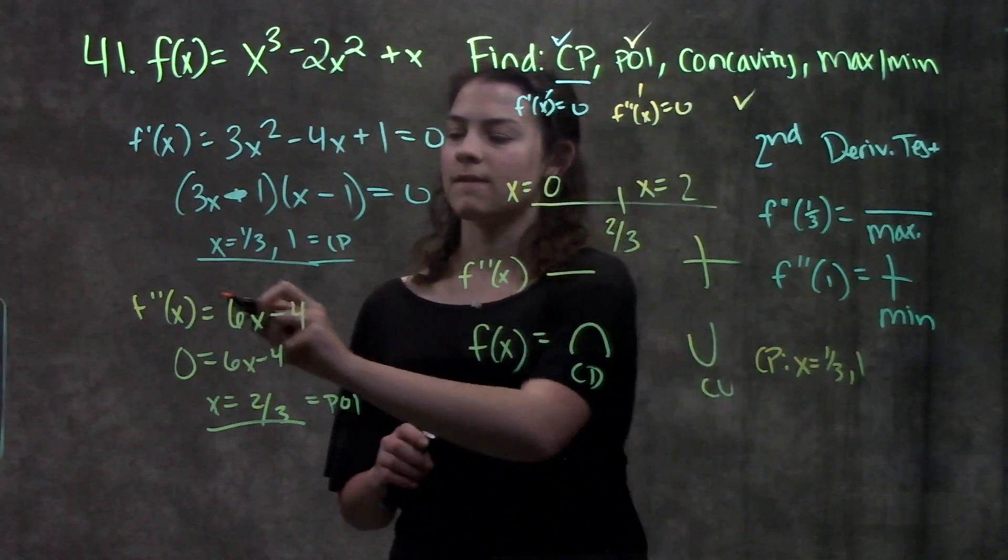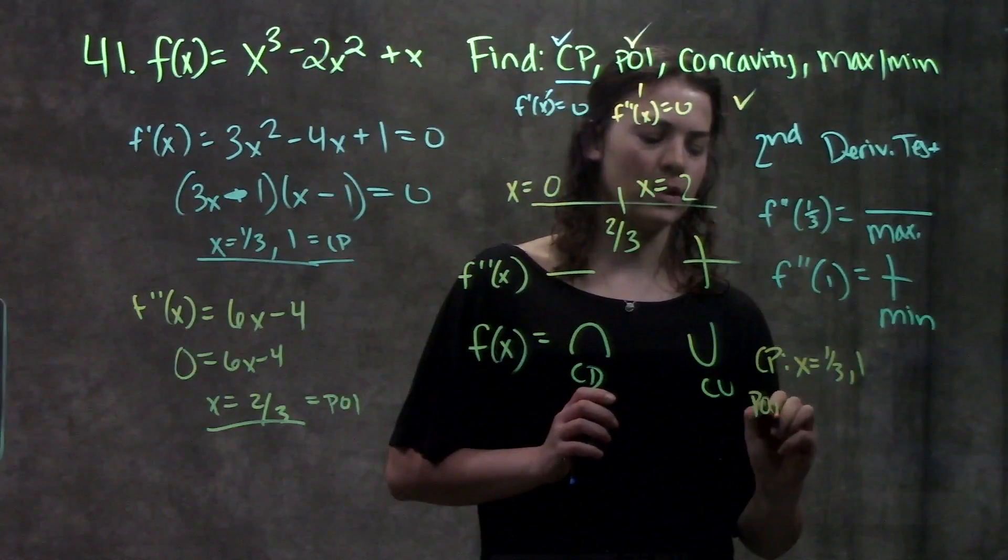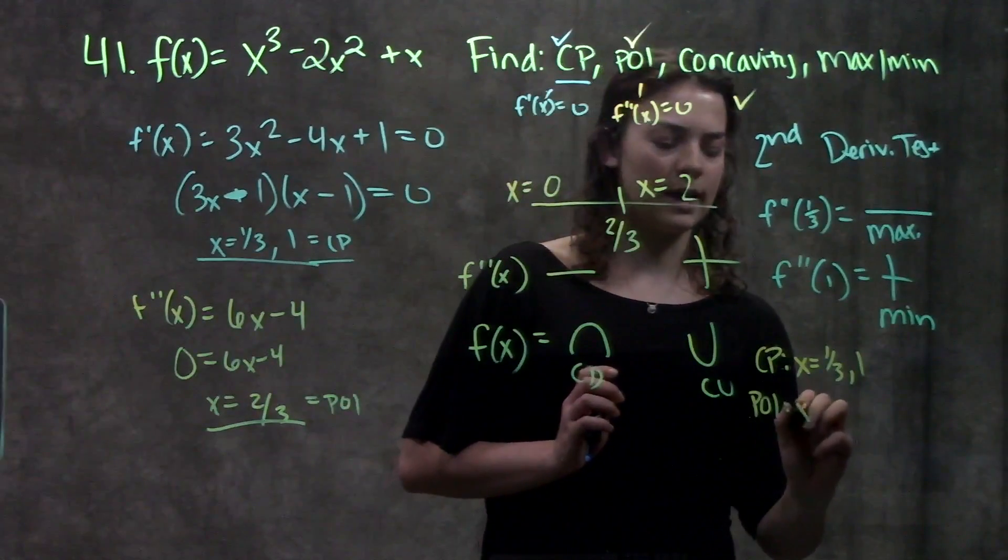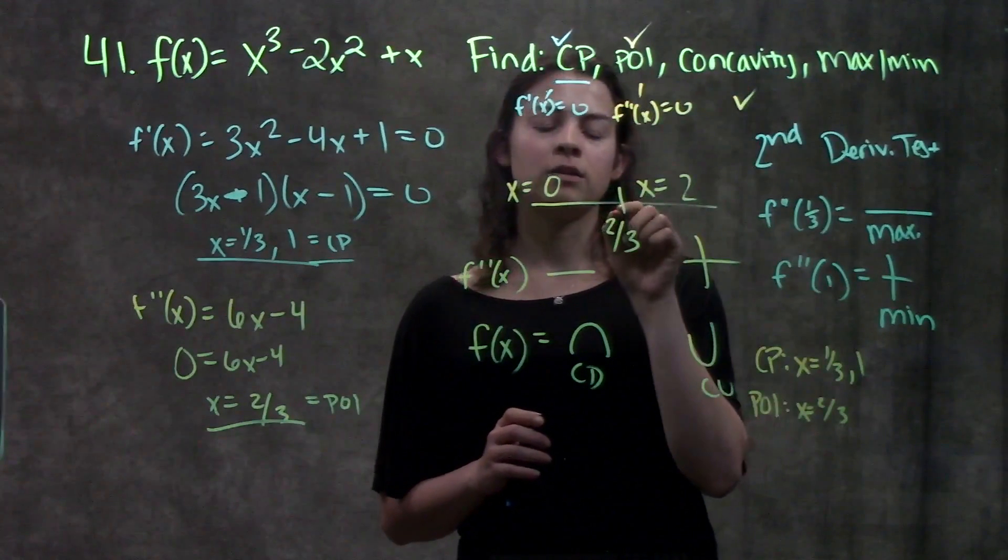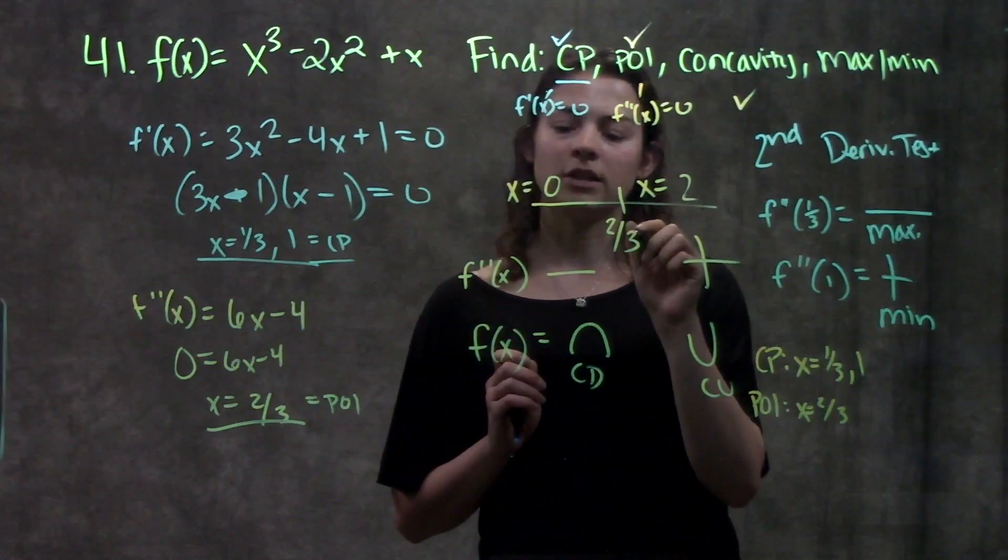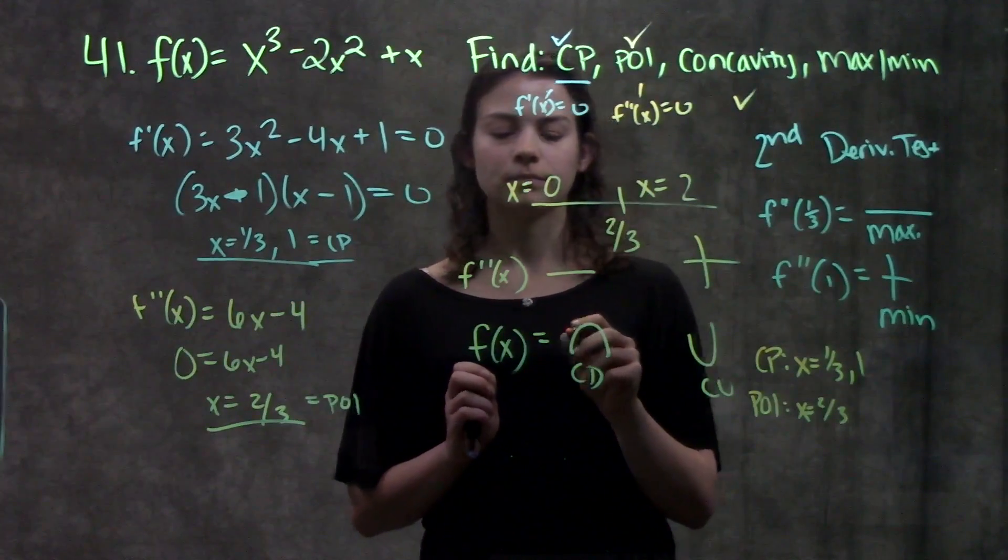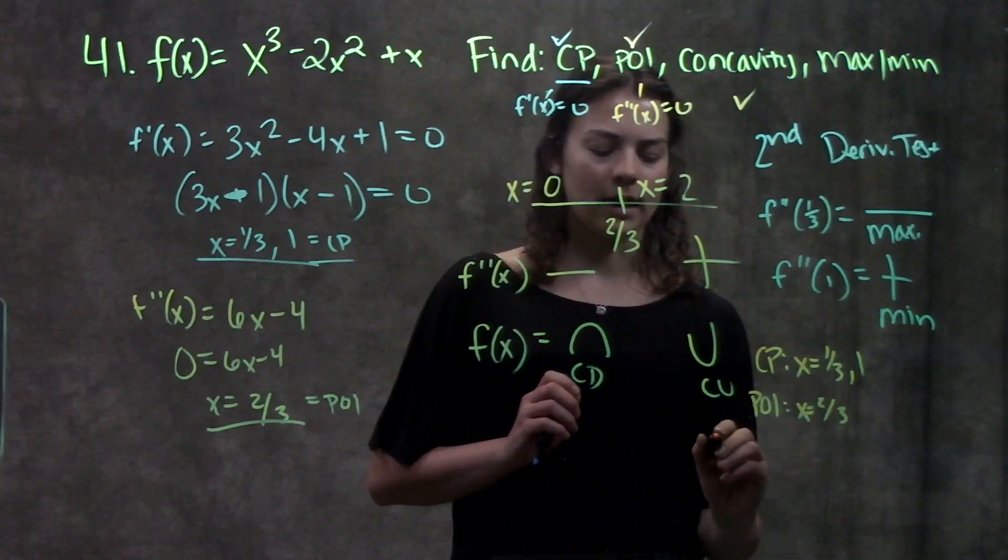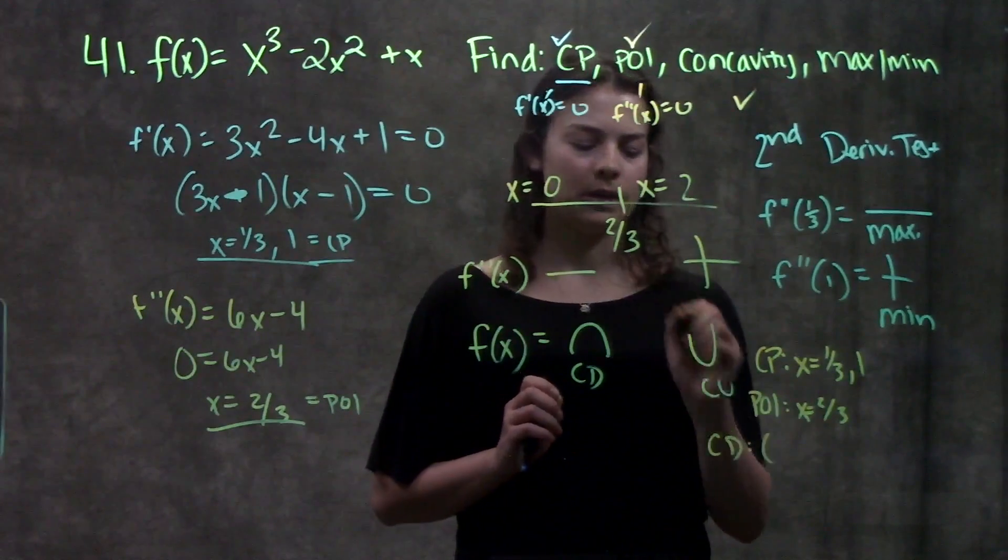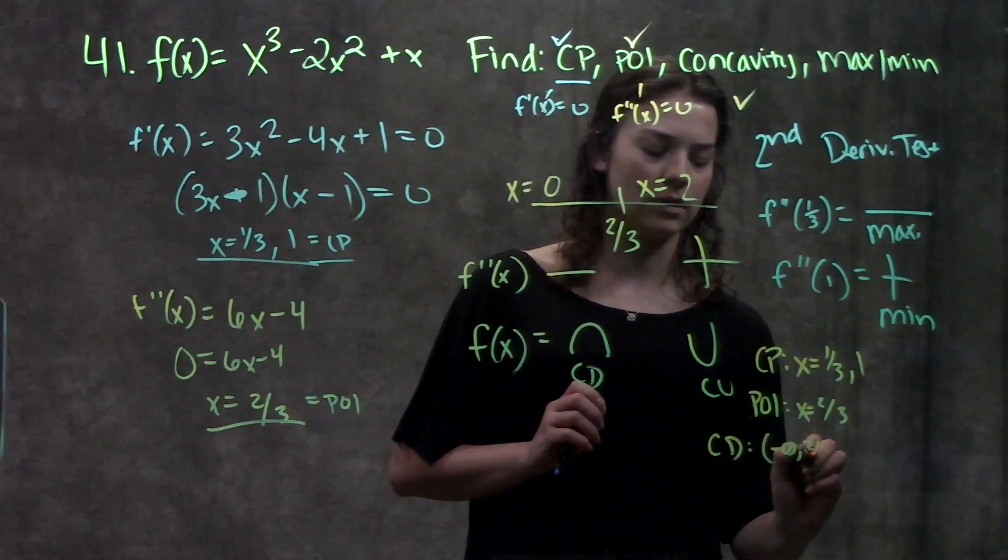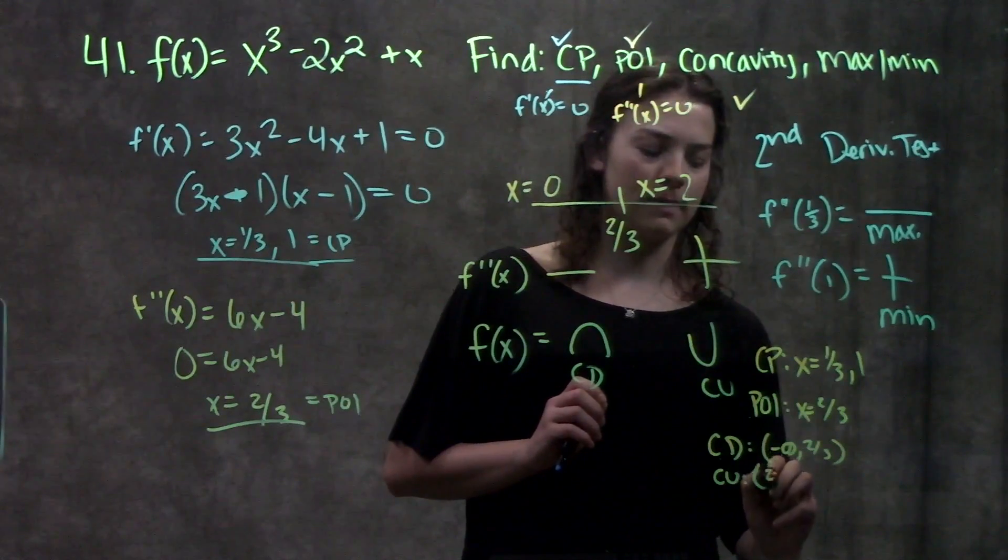My points of inflection I found by taking my second derivative, setting that equal to 0. And I got that my point of inflection was just x equals 2 over 3. My concavity I found by putting test points on either side of my point of inflection, putting it into my second derivative and looking at the sign. And when I did that, I got that f of x was concave down on the interval negative infinity to 2 thirds. And it was concave up on the interval 2 thirds to positive infinity.